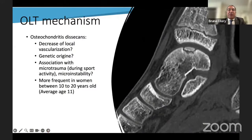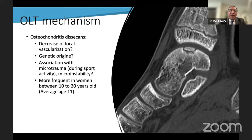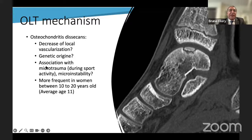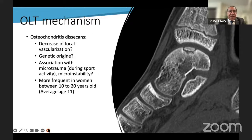I would like to address osteochondritis dissecans specifically, because we cannot mix it with a chronic or traumatic lesion. Its etiology is not universally agreed upon — some authors cite lack of vascularization, others a degenerative origin, and I believe it is most likely a microtraumatic origin. This lesion is very frequent in young patients around 10 to 12 years old, with an average age of 11, and it most frequently affects females.